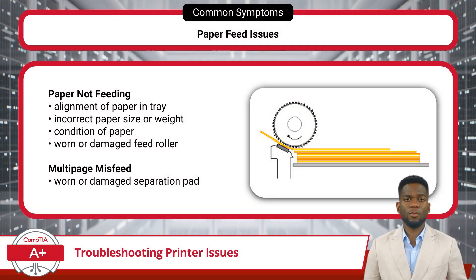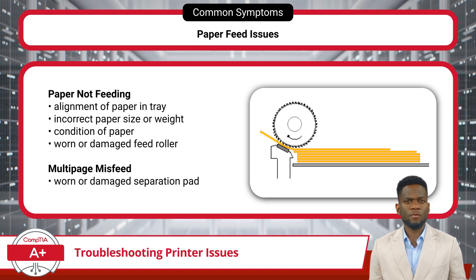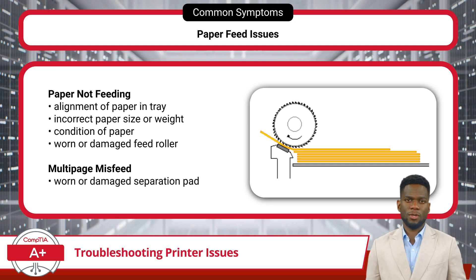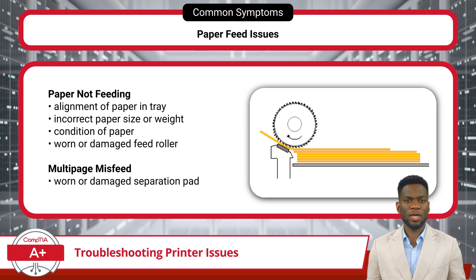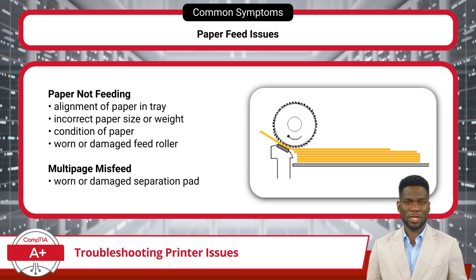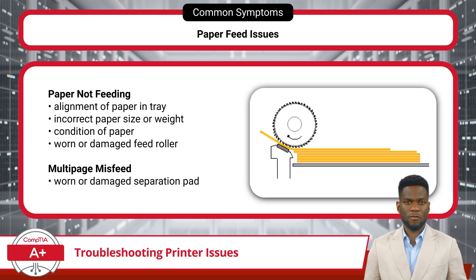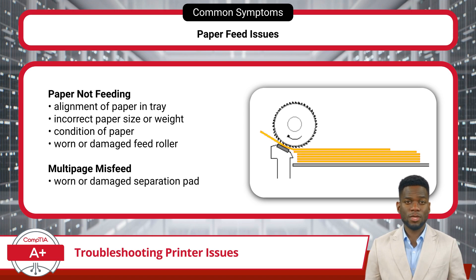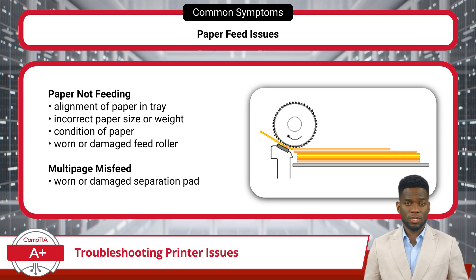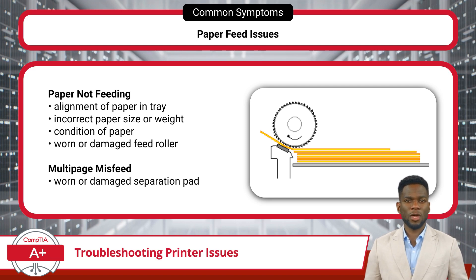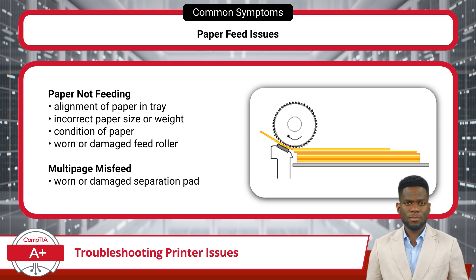When encountering problems with paper not feeding properly, ensure that the paper is correctly aligned within the paper tray. Verify that the paper loaded matches the size and weight specifications supported by the printer. Check the condition of the paper stack, as damage such as creases or moisture can lead to feeding problems. Inspect the feed roller for signs of wear or damage, as a worn feed roller may not grip paper properly. For multi-page misfeeds, a common cause is a worn or damaged separation pad, which ensures only one sheet is fed at a time.